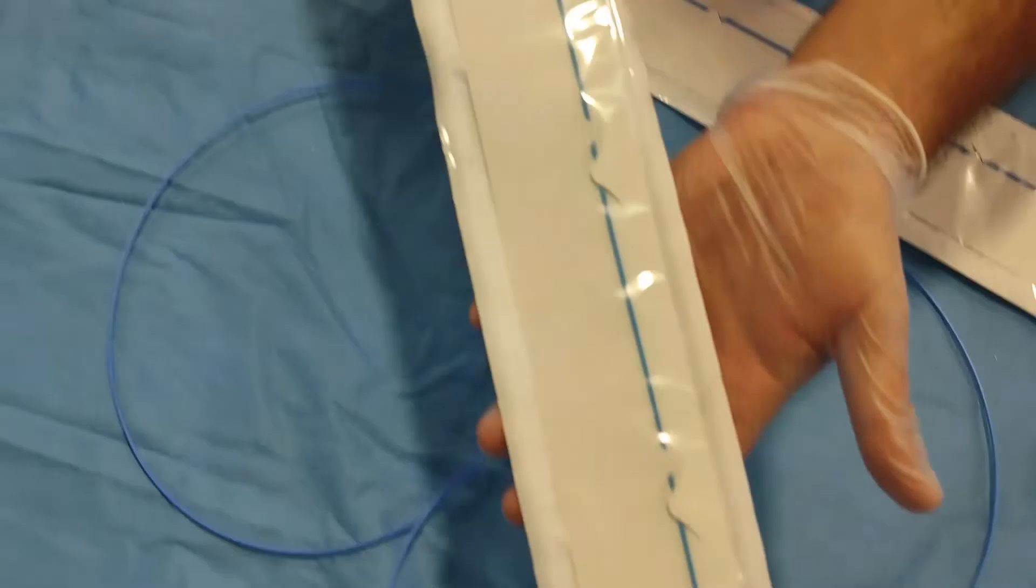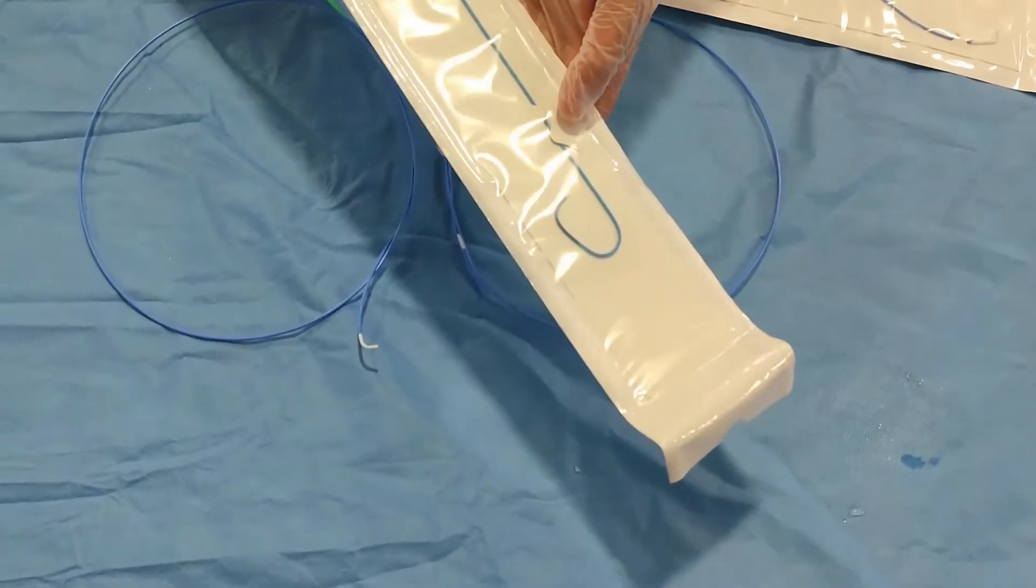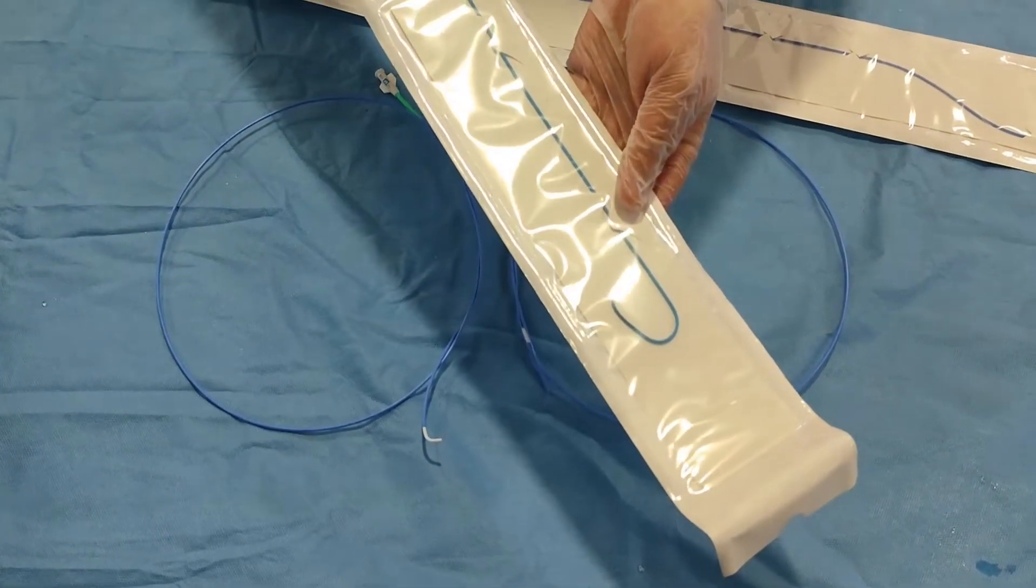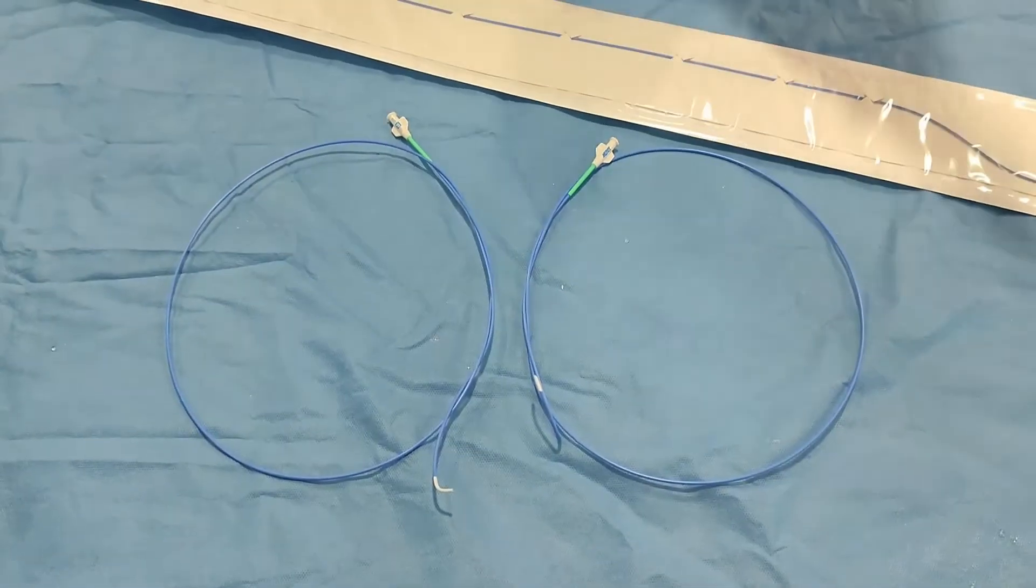This is how it comes in the packaging. This is a diagnostic left catheter for coronary, so we are using it for coronary angiogram only. This is a diagnostic catheter. I will show you the diameter as well.